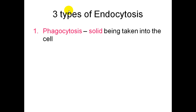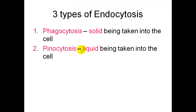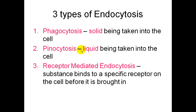There are three types of endocytosis. First, phagocytosis is when a solid is being taken into the cell. Second, pinocytosis is when a liquid is being brought into the cell. Third, receptor-mediated endocytosis is when a substance being brought into the cell has to bind to a specific receptor on the cell membrane before it can be brought in.